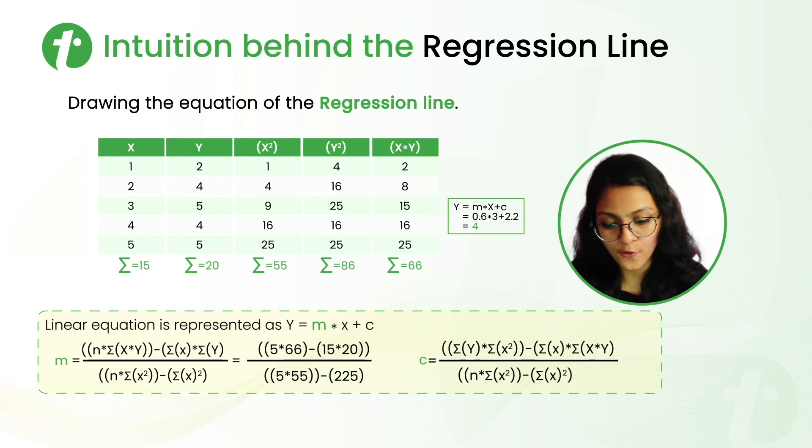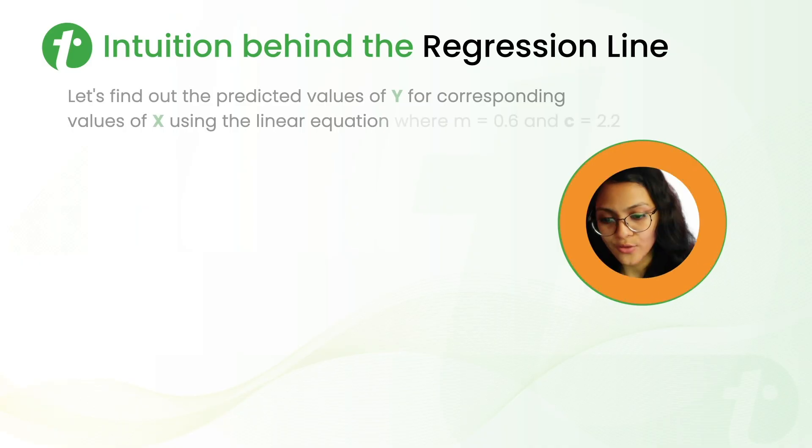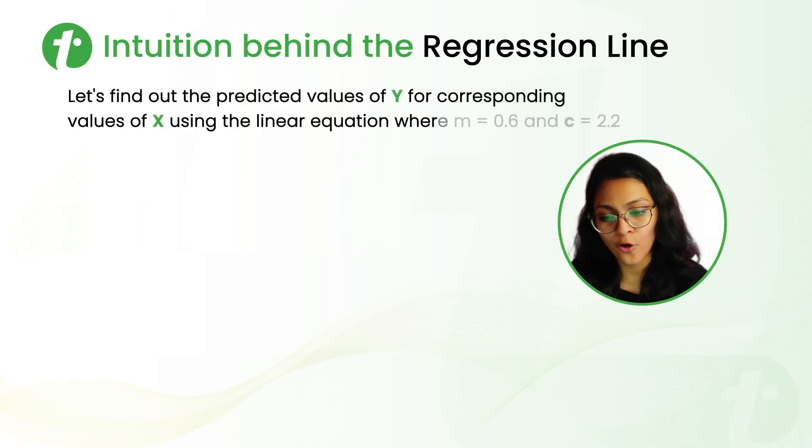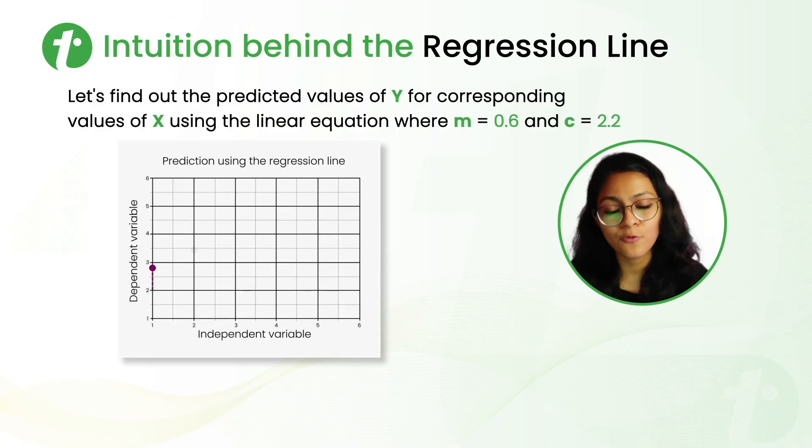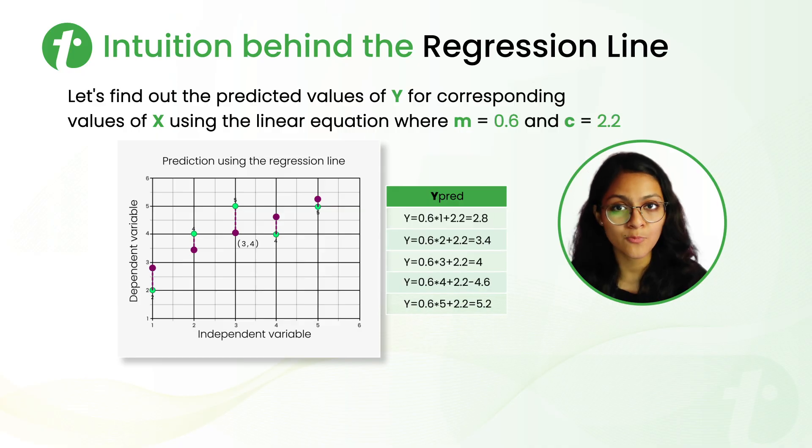So, after putting all these values in the formula of M and C and calculating, we are getting the value of M as 0.6 and value of C as 2.2. So now, after having the value of M as 0.6 and value of C as 2.2, we finally have a linear equation using which we can predict the values of Y for the corresponding values of X. And that is represented by this pink dotted line.